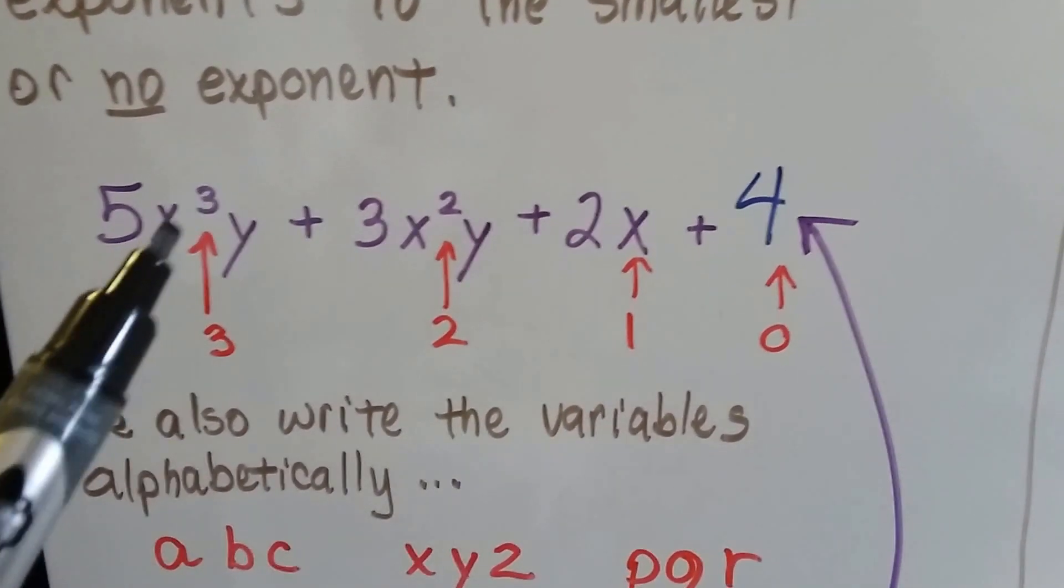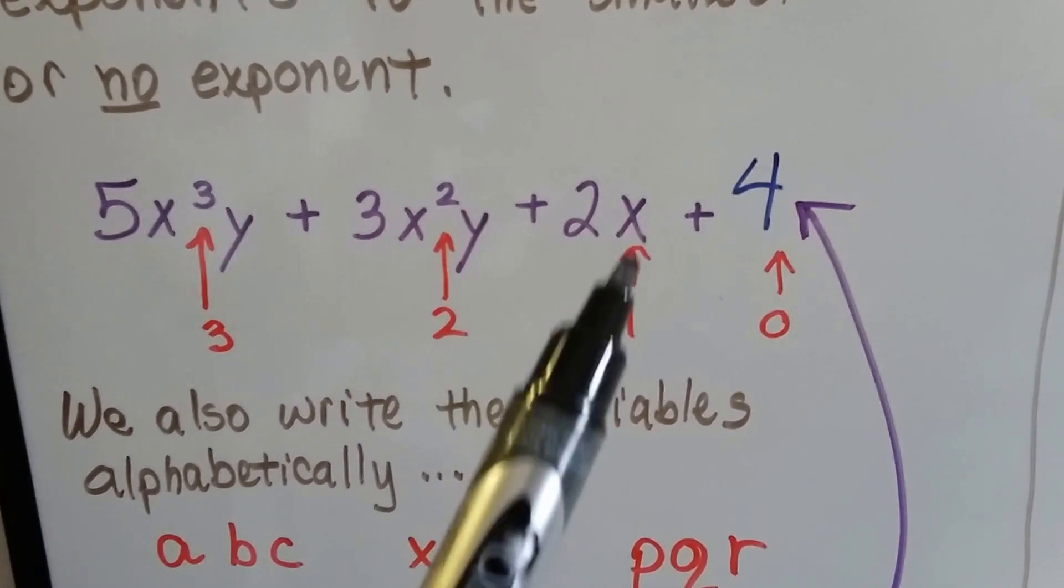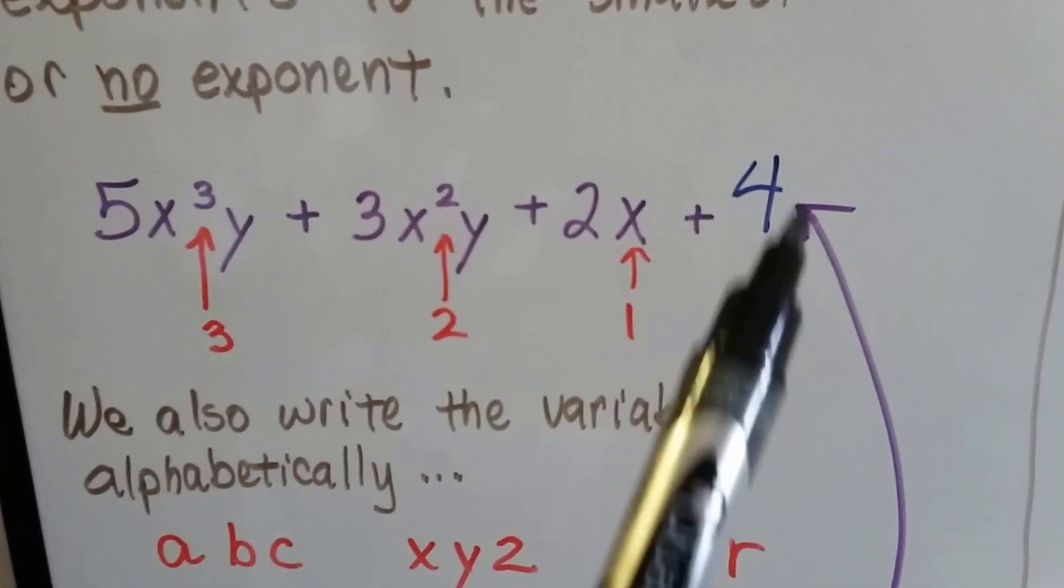Here x is to the third power, x is to the second power, x is to a 1, and here it would be to a 0.